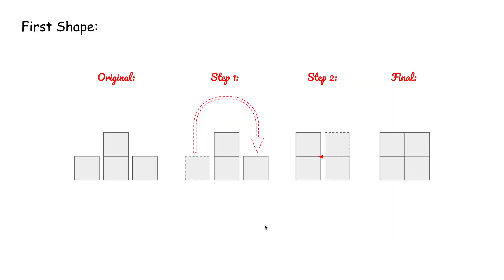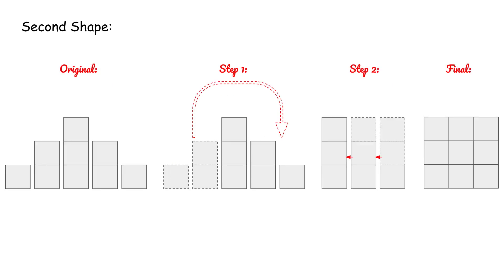So how did we do that? For the first shape, we rearrange the dashed square to its new position so that we can make a new large square. There is a gap between these two stacks, and we compact them to make a perfect large square. We do the same process for the second and third shapes.